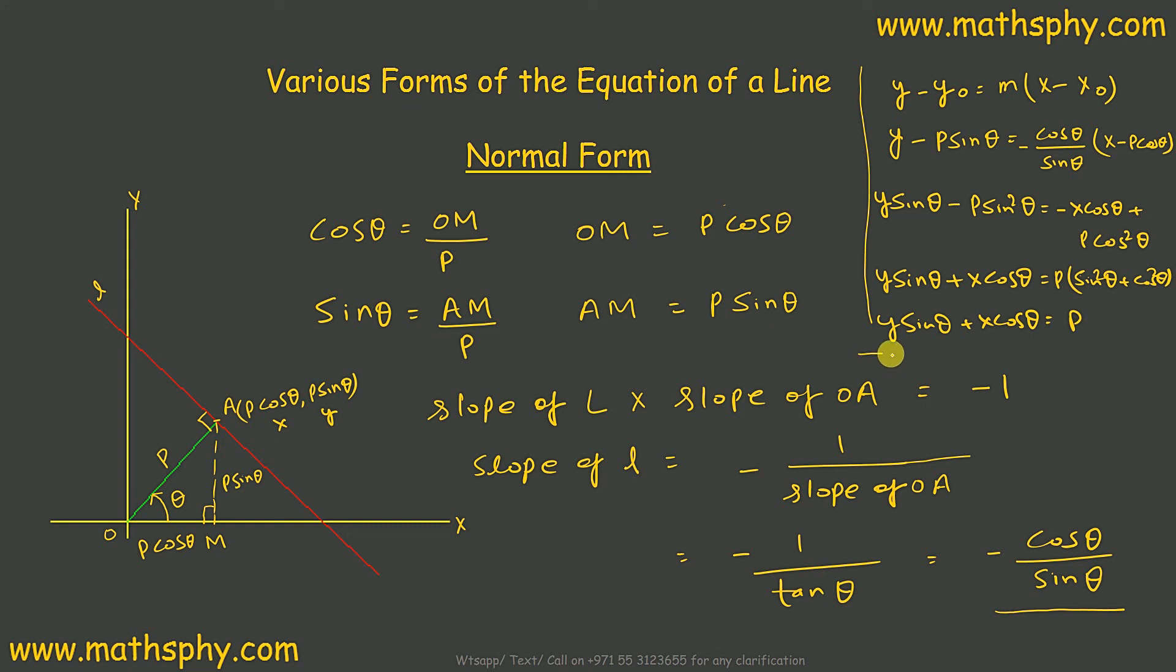So, this comes to y sin theta plus x cos theta equals to P. Or, x cos theta plus y sin theta is equal to P. So, in case of normal form, the equation of the line would be x cos theta plus y sin theta equals to P. I write this, where P is this distance.